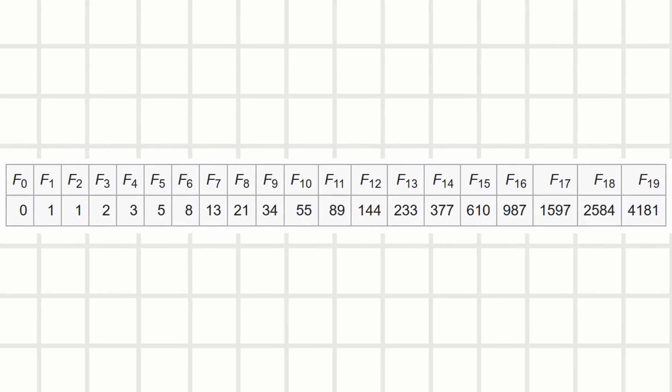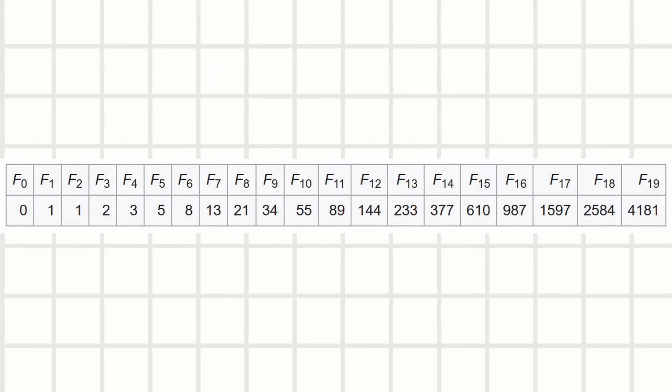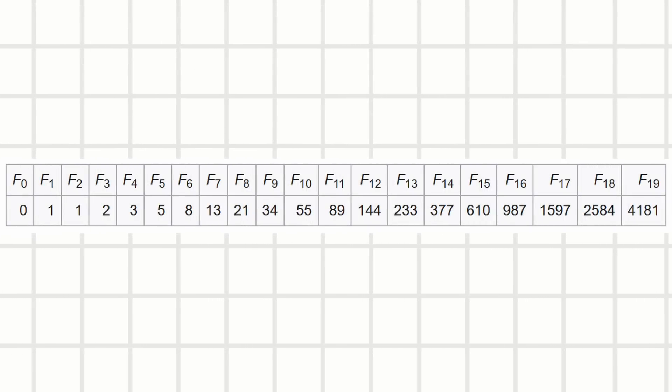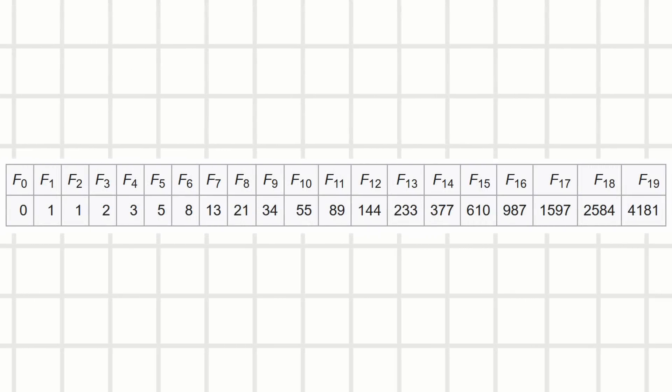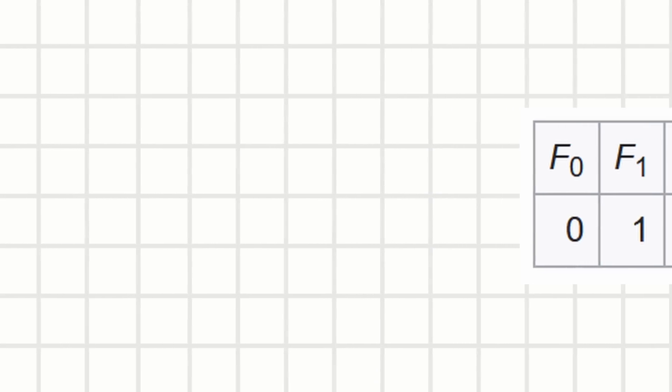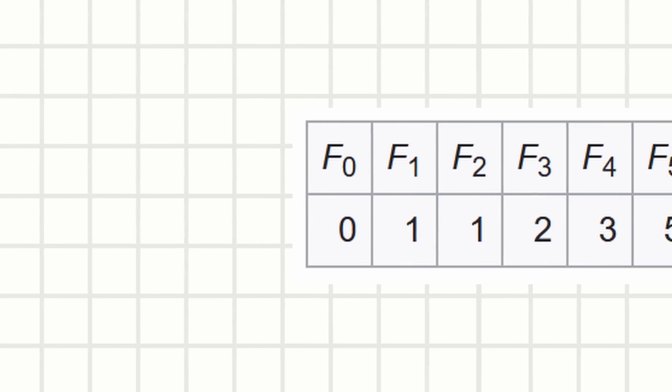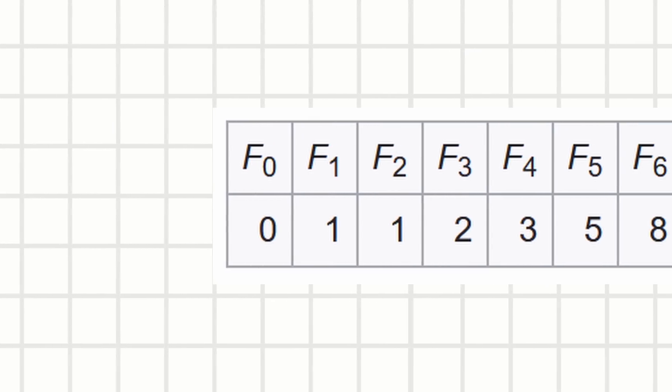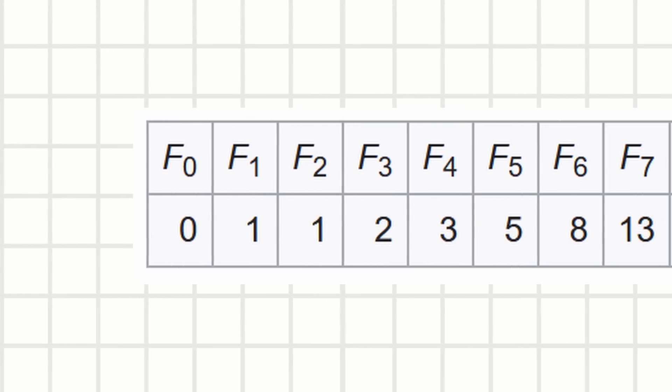There's a sequence called the Fibonacci sequence. The rule is simple: start with a 0 and a 1, then add the last two numbers for the next number. So 0 plus 1 is 1, 1 plus 1 is 2, 1 plus 2 is 3, 2 plus 3 is 5. Quick maths.